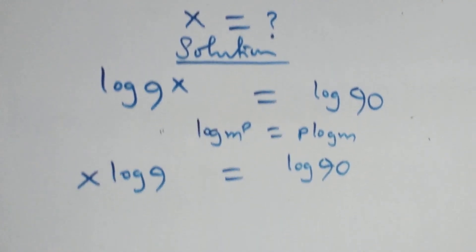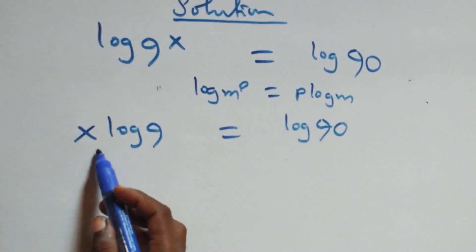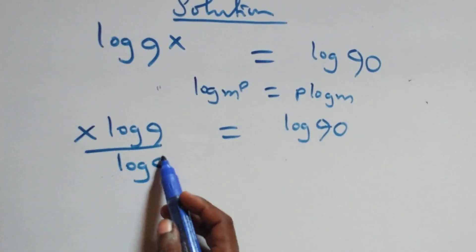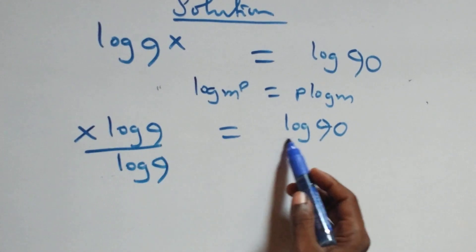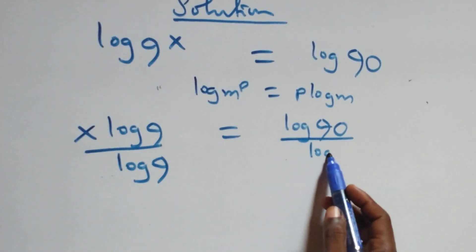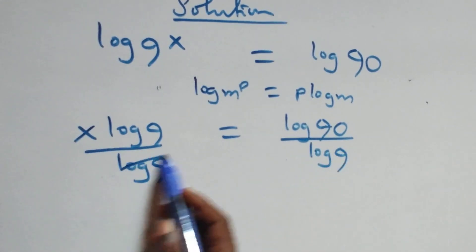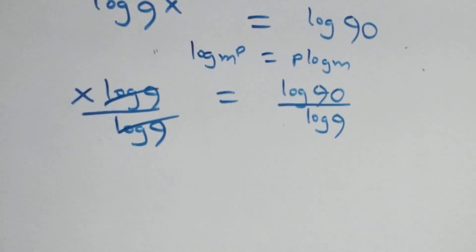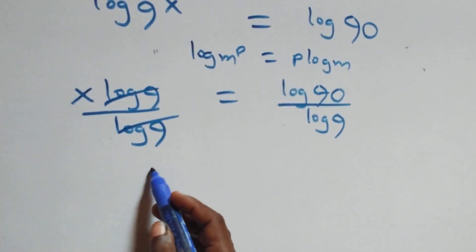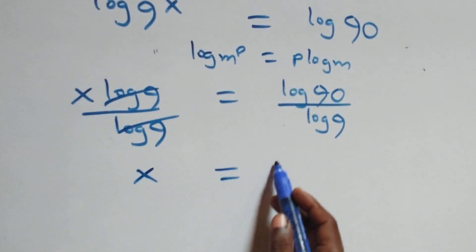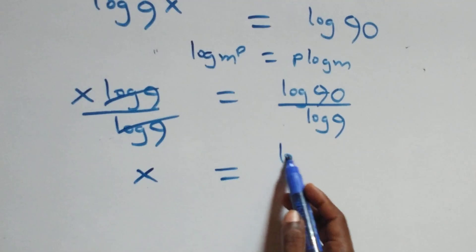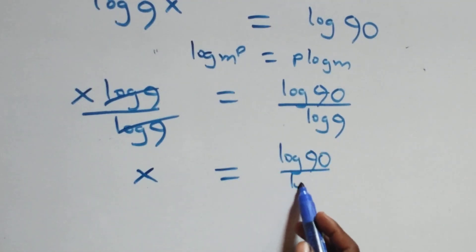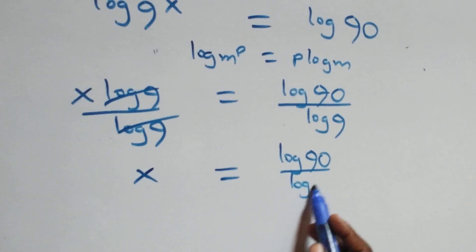The next step, divide both sides by log 9. We divide this side by log 9 and also divide this side by log 9. Log 9 cancels each other here, and we have x equals to log 90 over log 9.